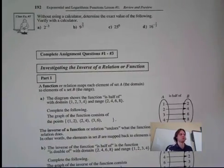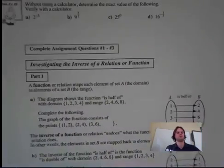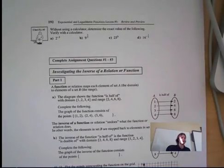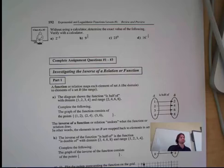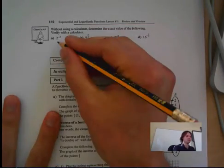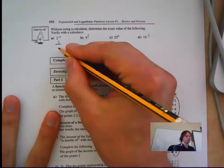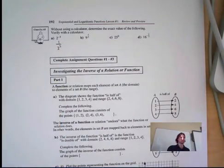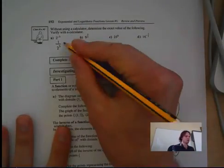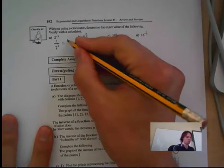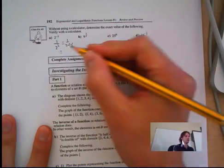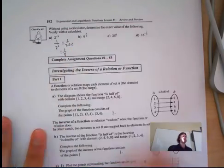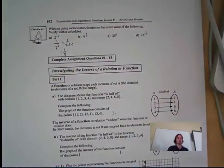Question 3: without using a calculator, determine the value of the following. First, 2 to the negative 3. That is the same thing as 1 over 2 to the 3. And 2 to the 3 is 2 times 2 times 2, which is the same thing as 1 over 8.